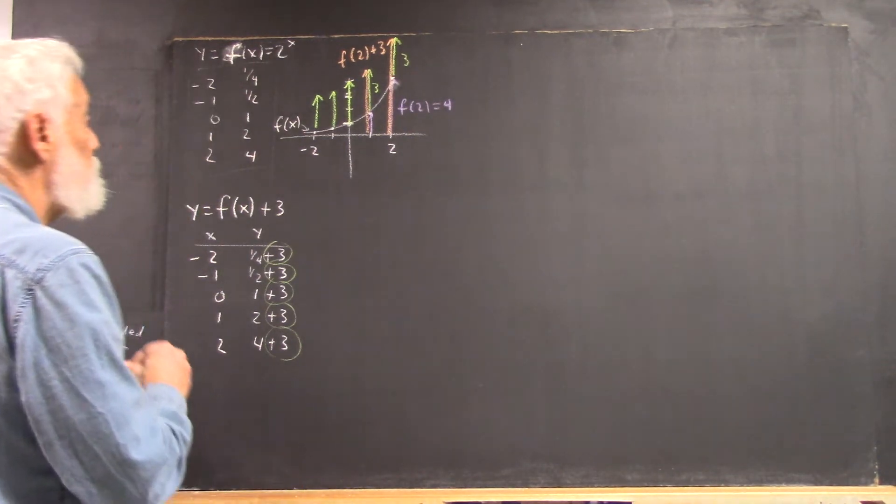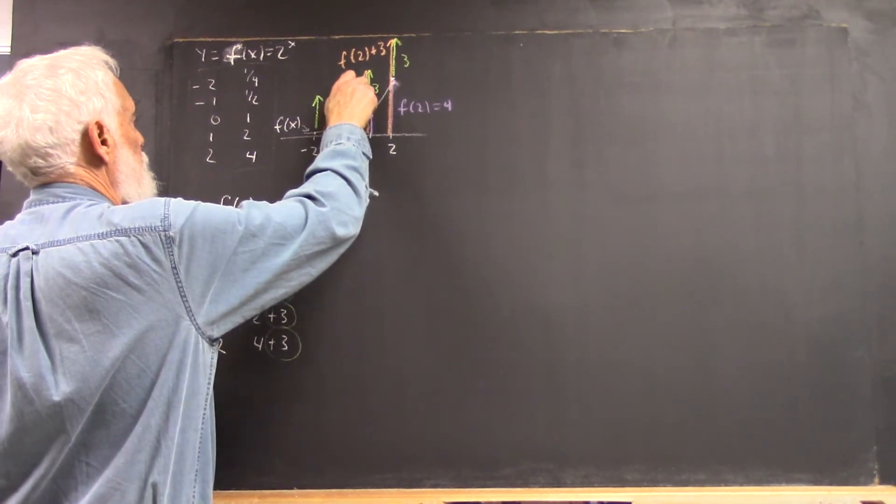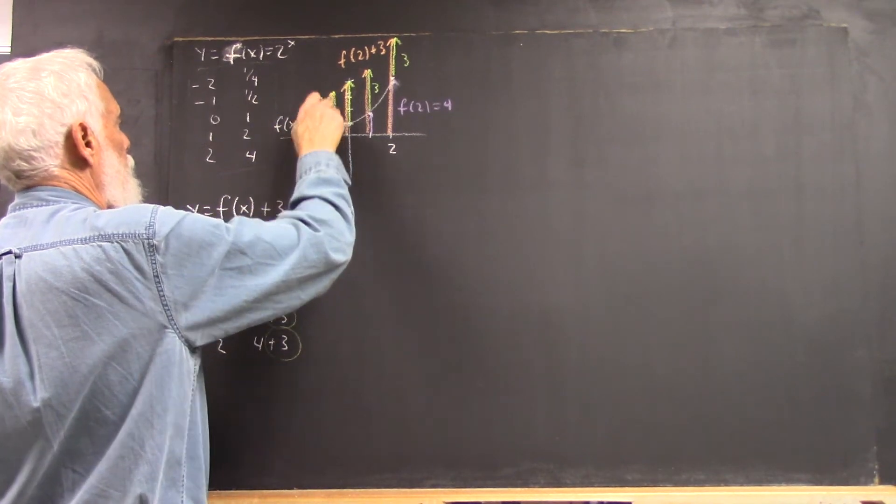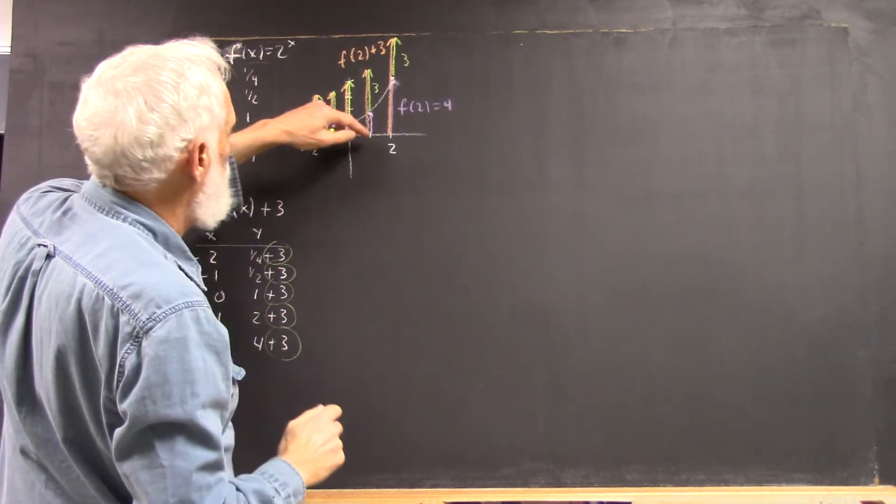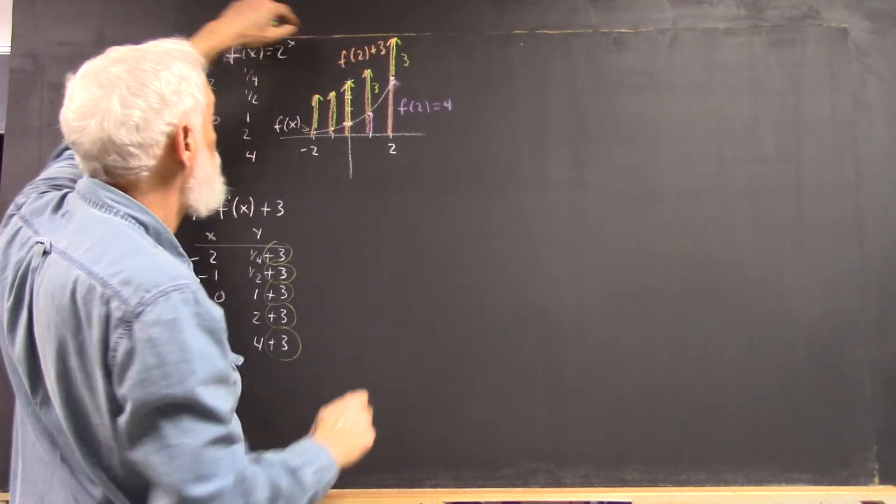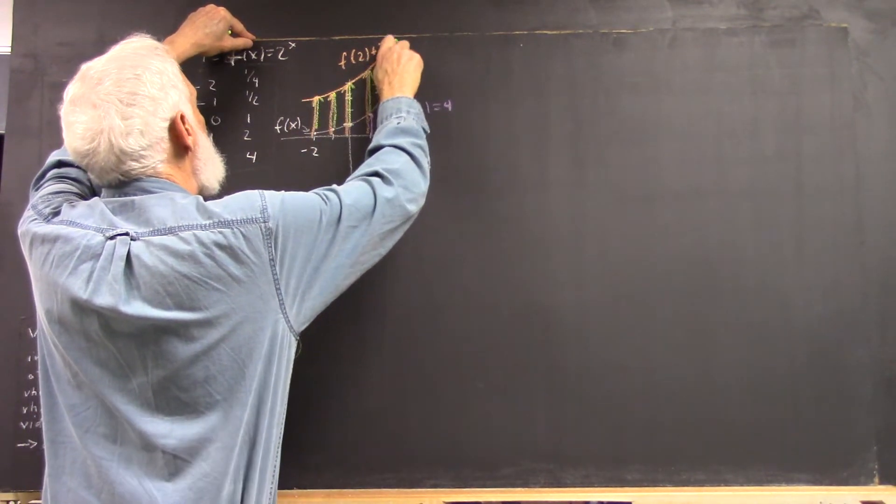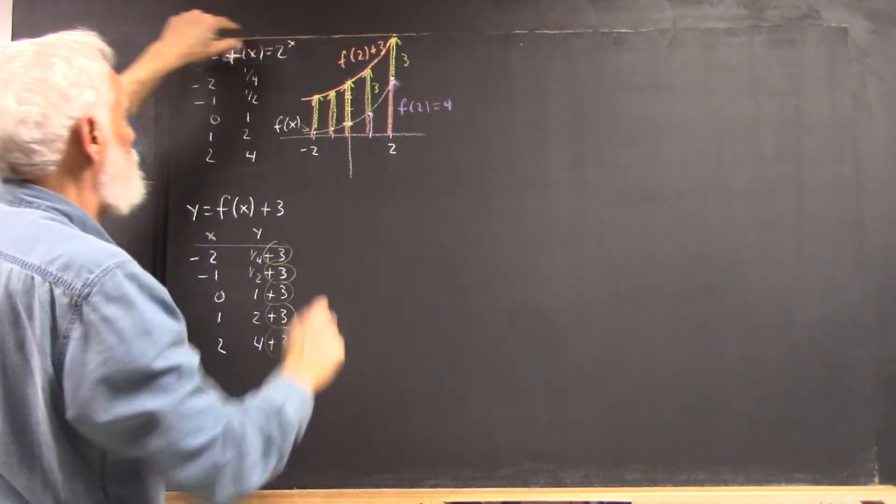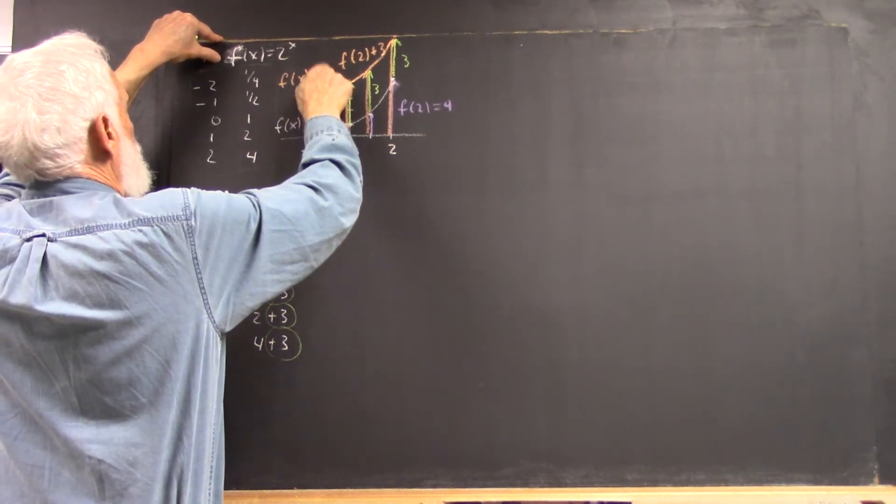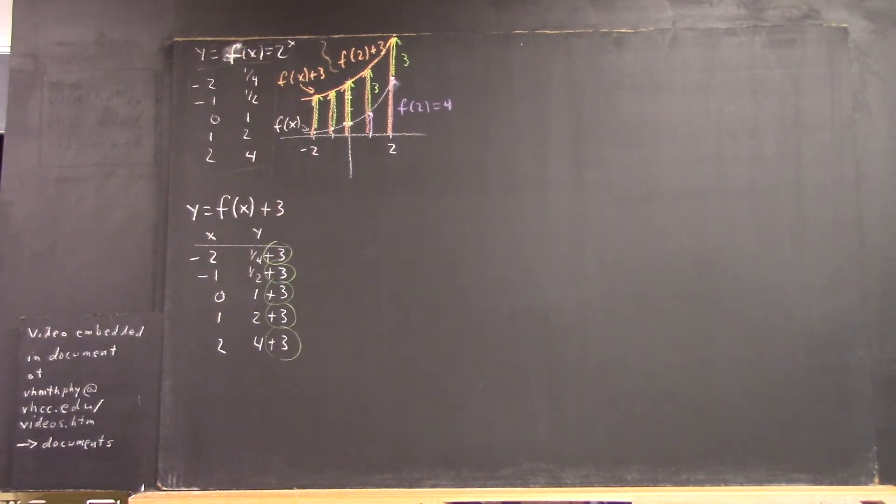But when I do, I get the f of x plus 3 values, which, of course, would be represented by an arrow from here all the way up to here in each case. And then I can sketch my curve for f of x plus 3. Okay?